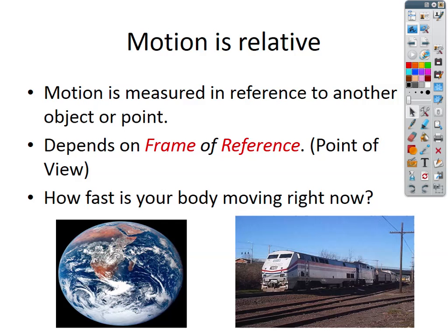Motion is relative, and this is very, very tricky as an early concept. What we're saying is it's all based on your point of view — it depends on what you are doing. Motion is measured in reference to another object or point. If an object has changed its spot in relation to where it was, there must have been motion. We call this your frame of reference — basically, where are you?